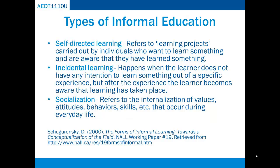Shagurnsky identified three types of informal learning. The first is self-directed learning, which refers to learning projects carried out by individuals who want to learn something and are aware that they have learned something. An example of self-directed learning is an adult who wants to learn more about a historical event, and to do so reads books and archival documents, watches movies and videos, and goes to museums and talks to people who have participated or witnessed those events.